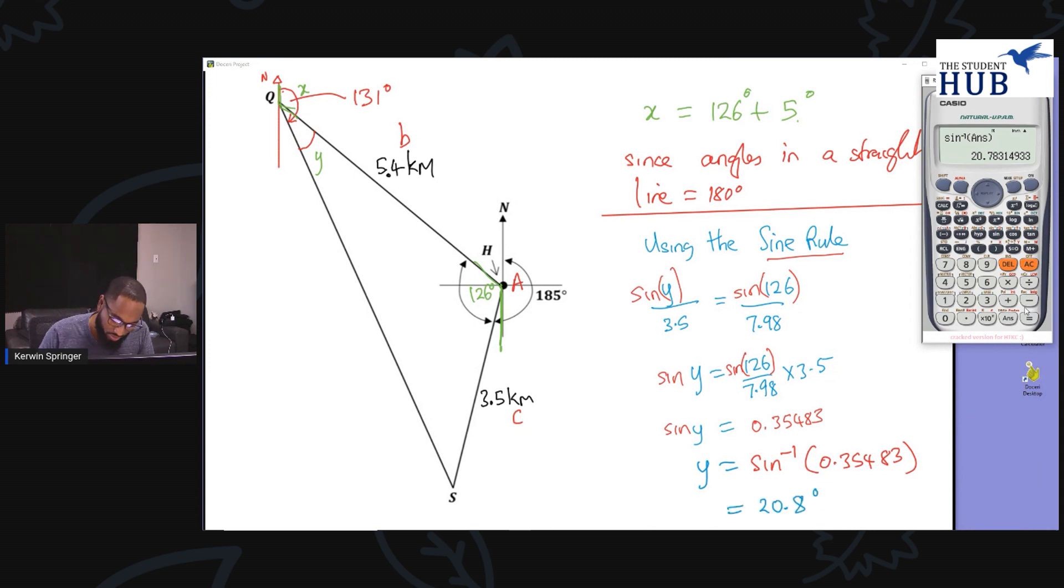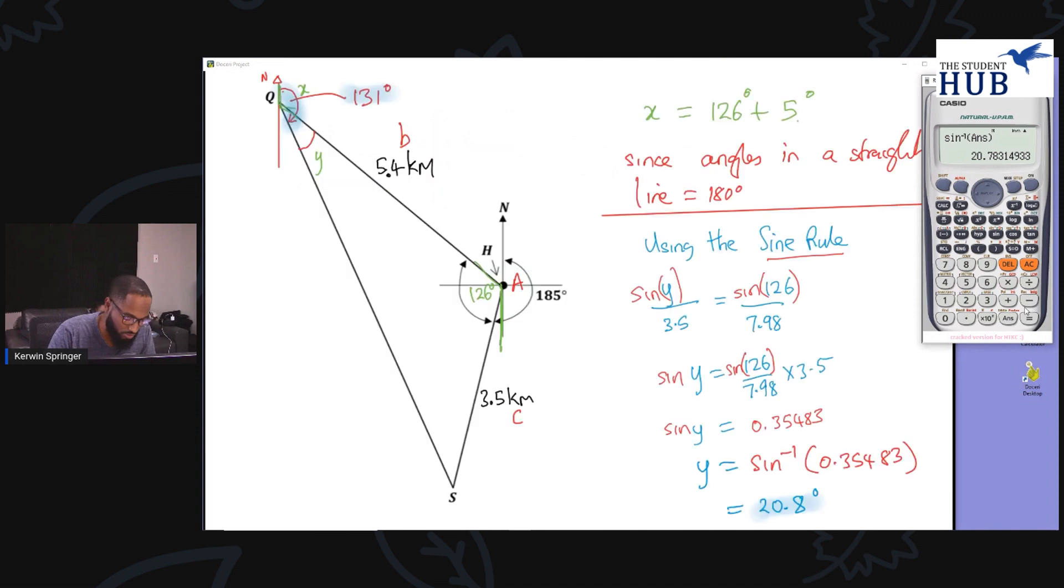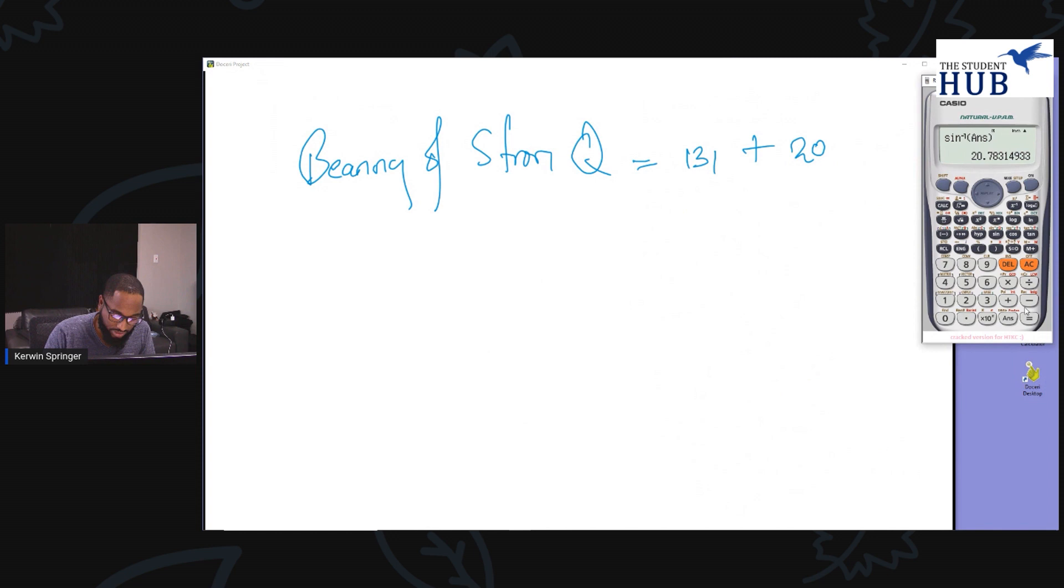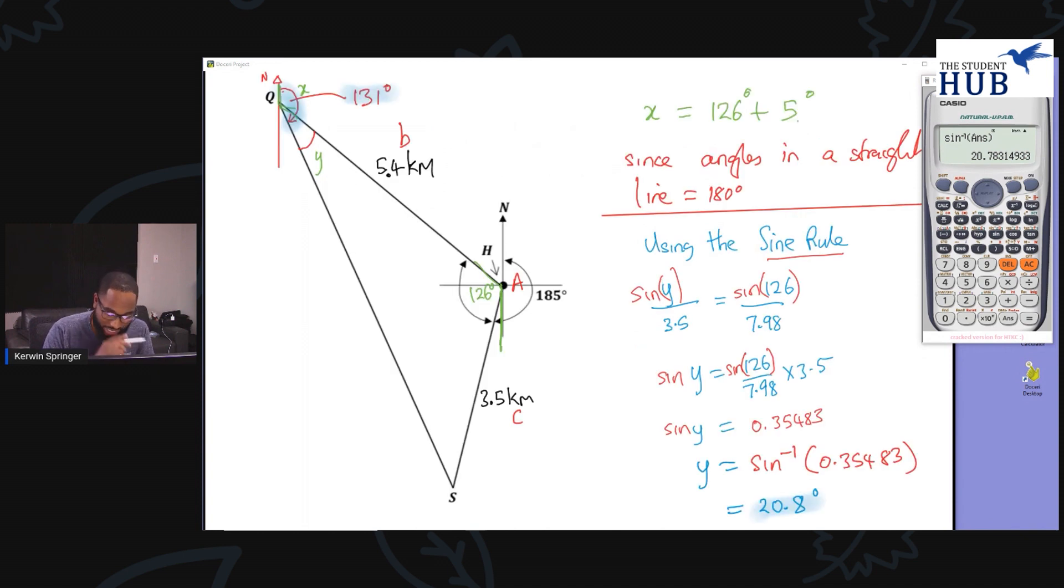And we get 20.8 degrees. So y is 20.8 degrees and x is 131 degrees. So what's the complete angle or the complete bearing of S from Q? The bearing of S from Q, one of the toughest questions, is 131 plus 20.8 degrees, so approximately 152 degrees. That brings us to the end of this bearings question.